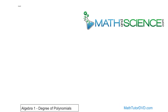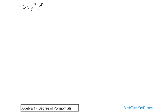So if you had, for instance, negative 5 times x times y to the fourth power times z to the third power, sometimes on a test you might be asked what is the degree of this? Now I'm calling it a polynomial — really this is just a monomial because there's one term. And you want to find the degree of this guy.